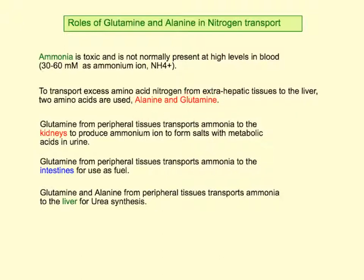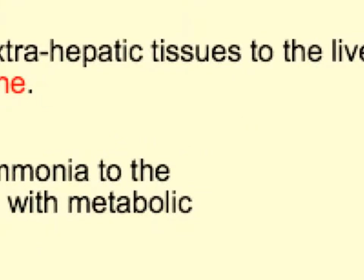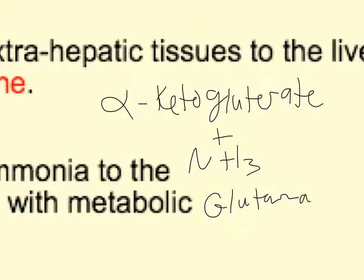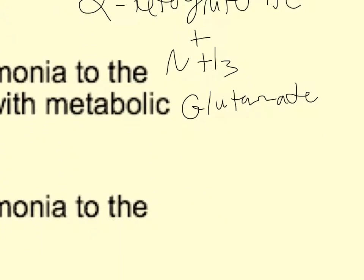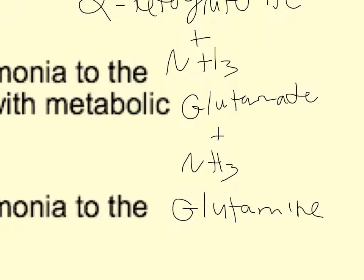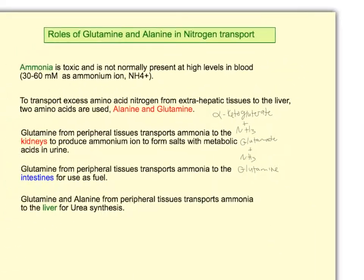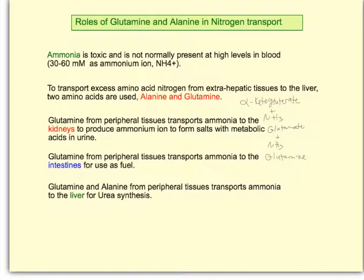The reason glutamine is a good carrier is that if you start with alpha-ketoglutarate and add one NH3, you get glutamate. Add another NH3, and you get glutamine. So glutamine is essentially a carrier of two nitrogen components on a single amino acid, making it excellent for nitrogen transfer.